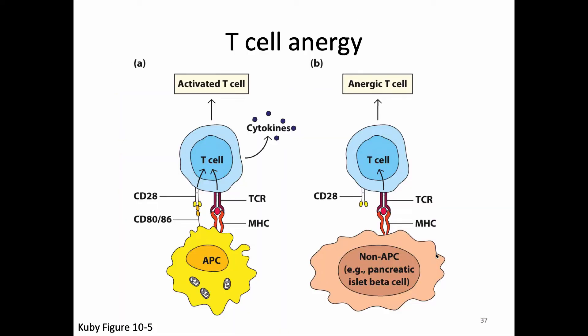If our T-cell gets signal 1 through the T-cell receptor and signal 2 through CD28, that T-cell is activated. If that T-cell sees just signal 1 through the T-cell receptor without getting ligation and signal through CD28 — signal 1 without signal 2 — that T-cell is anergized. It is turned off and no longer able to function. This would likely be an autoimmune reaction happening in the periphery, so we turn it off as part of peripheral tolerance.